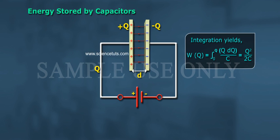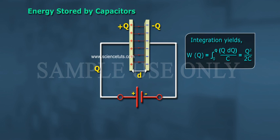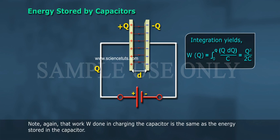So dW = Q·dQ / C. Integration yields W(Q) = integral from 0 to Q of (q·dq / C) = Q² / 2C. Note that the work done in charging the capacitor is the same as the energy stored in the capacitor.